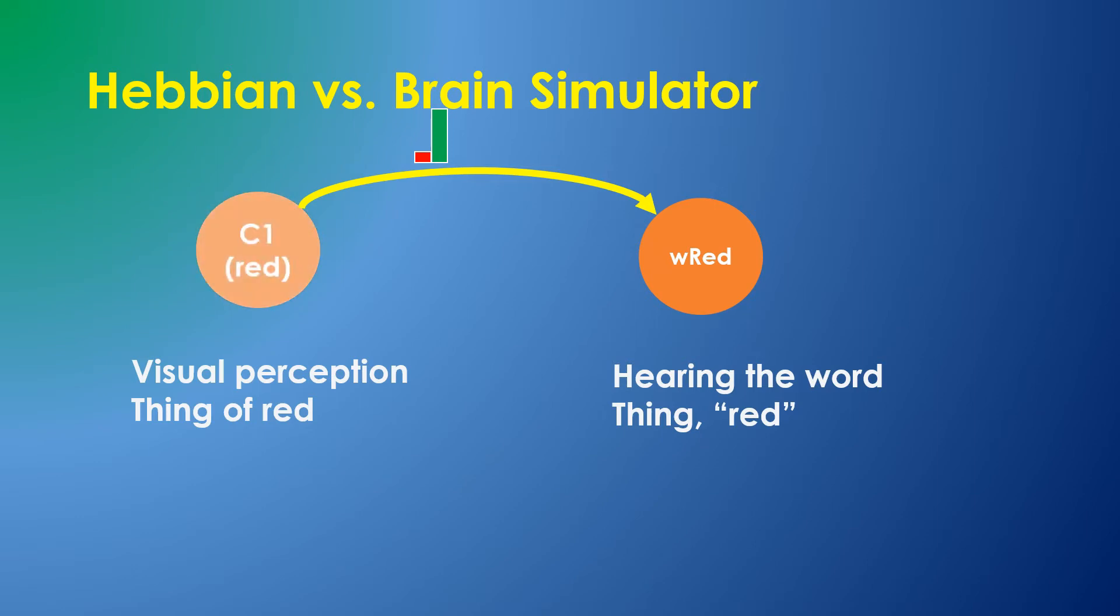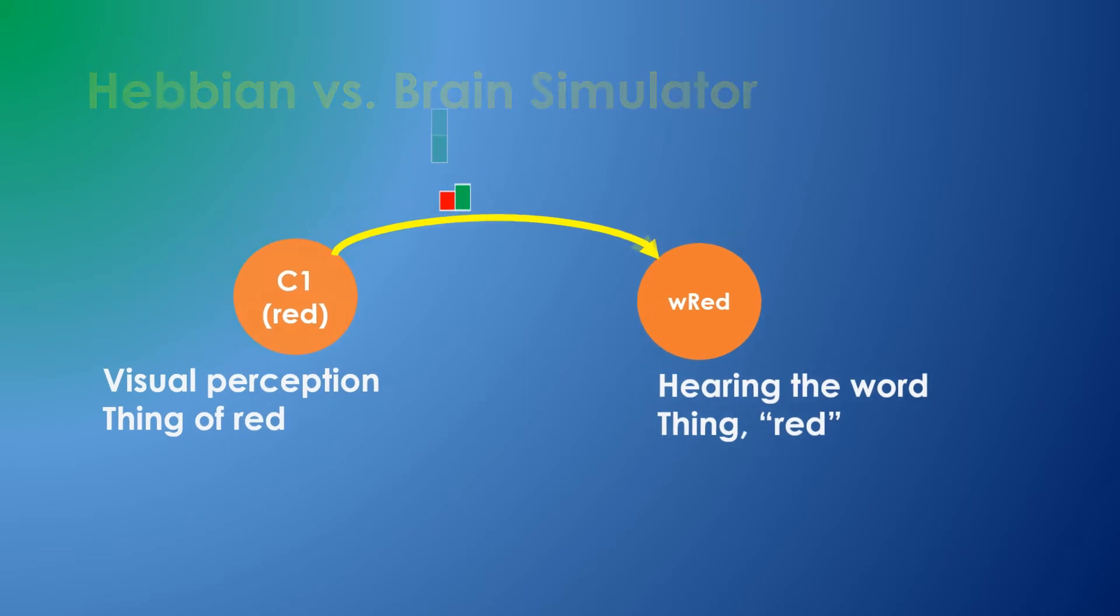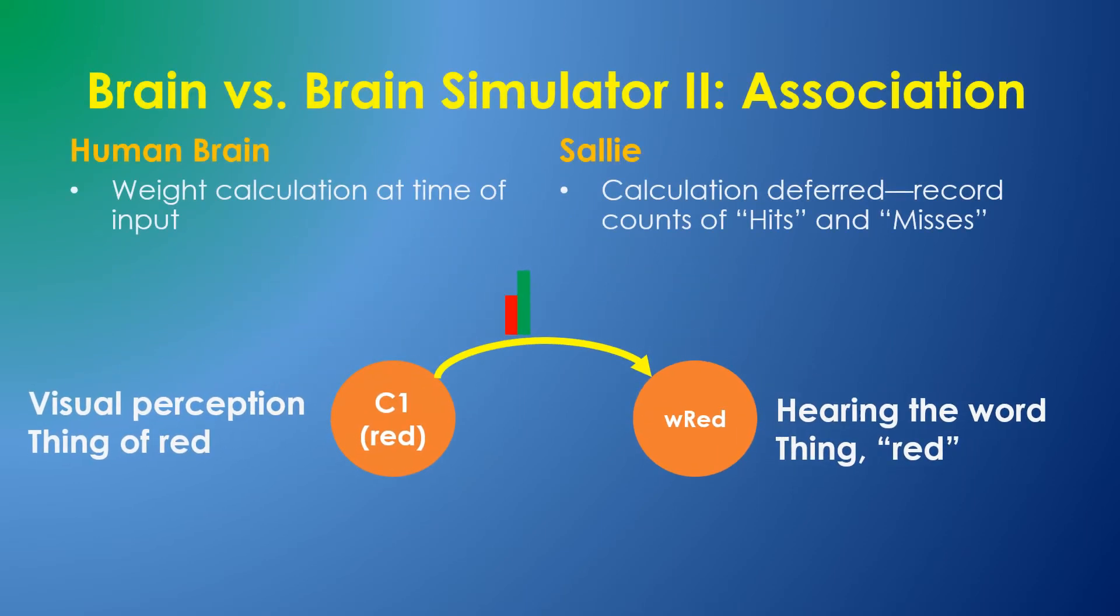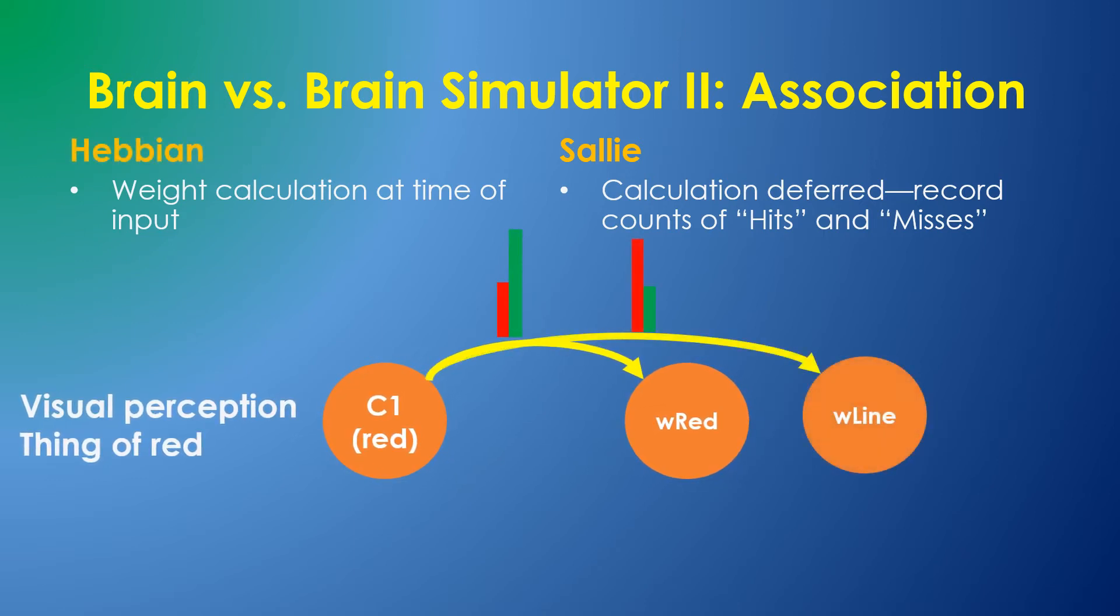Sally might hear many words as she is looking at a red object, but over a period of time, the counts of hits and misses will filter out the erroneous and ambiguous input, effectively implementing the well-known signal processing technique of signal averaging to eliminate what is essentially noise.